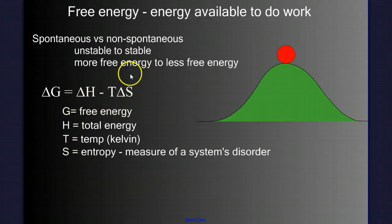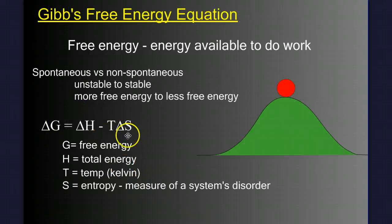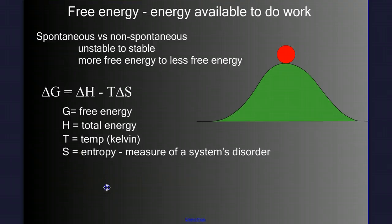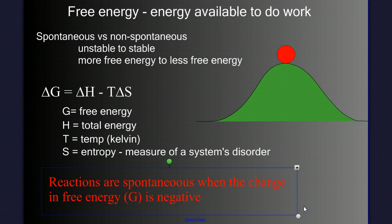Now, the delta H and the delta S are difficult numbers to come to exact values for. But luckily, we don't need the exact values. We just need to know if it's a positive or negative number. We can use this equation to determine whether a reaction is spontaneous or not spontaneous. All we need to know is this. What's the value of delta G? Is it a positive number or a negative number? A reaction will be spontaneous if the change in the free energy, delta G, is negative.